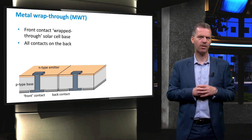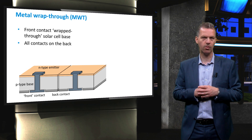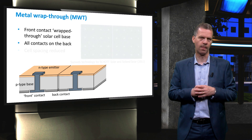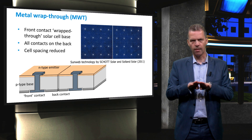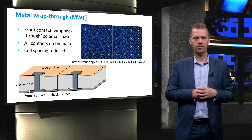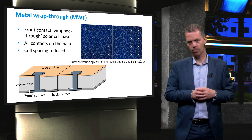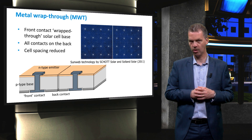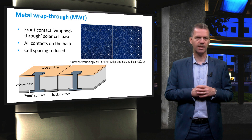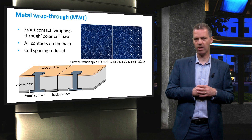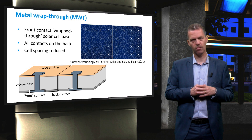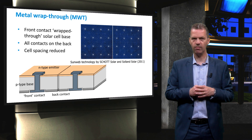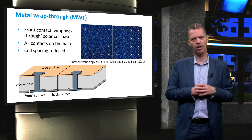Evidently, care must be taken that the via does not create a short circuit. Individual cells can therefore be placed much closer to each other. This image shows the Sunweb technology that was demonstrated some years ago by Schott Solar and Solon Solar. This technology can be recognised by its very special front contact design. The metal fingers are surrounding the wrapped-through contacts in a very distinctive, almost flower-like pattern.